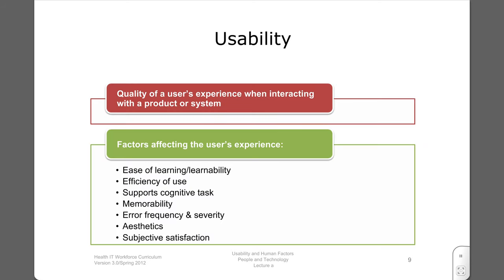What do we mean by usability? It reflects the quality of a user's experience when interacting with a product or system. Several factors affect this experience. Ease of learning is an important one — some technologies are walk-up-and-learn, the classic case being an ATM machine, but most medical systems and complicated software have a learning curve. Efficiency of use and memorability are also aspects of usability. The nature of error frequency and severity is particularly important in reference to usability of technology in medicine. Finally, aesthetics is a component of usability — is the display aesthetically pleasing, and does it provide subjective satisfaction? Will using this technology be a pleasant or a miserable experience?